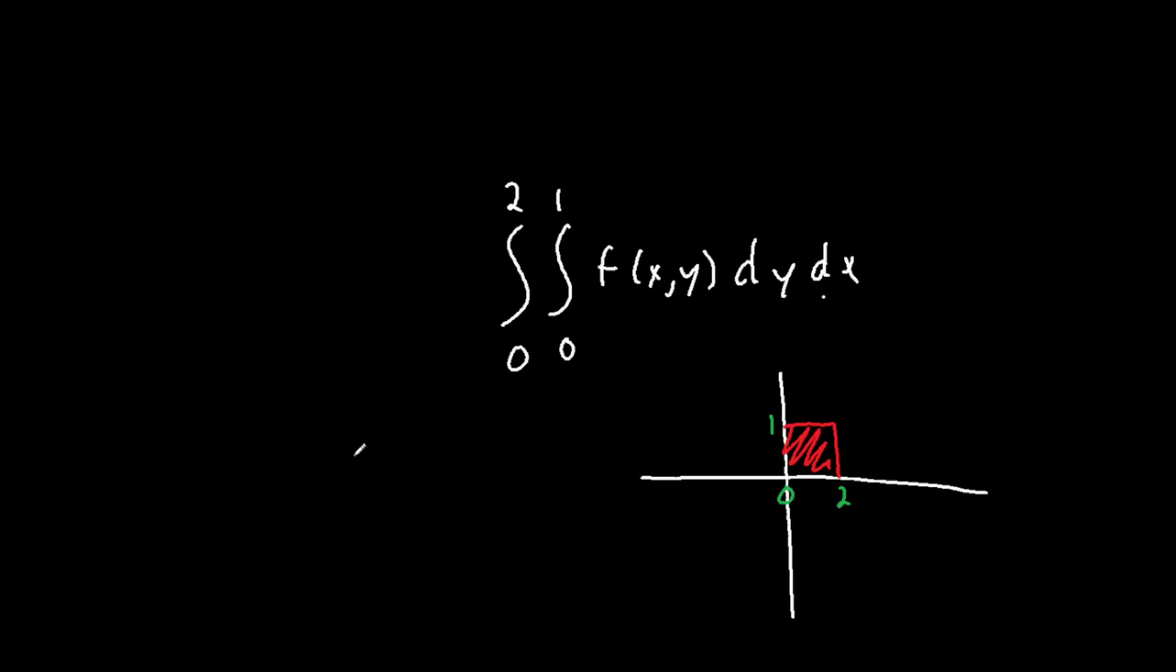Now for the x boundary, it's just from 0 to 2. Notice how we wrote 0 to 2 on the outside integral. So the order in which you place dy or dx matters when you are solving integrals.